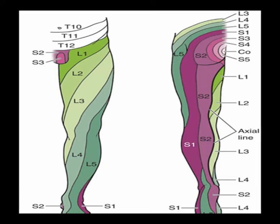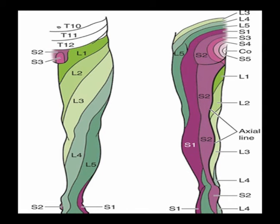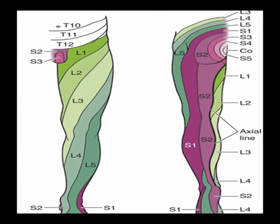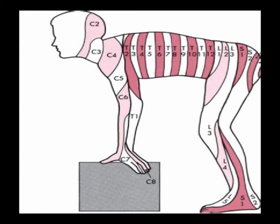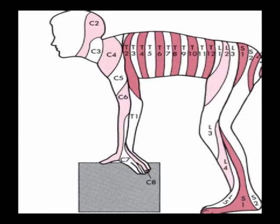Dermatomes are areas on the skin where sensory perception is controlled by a spinal nerve root. L1 controls the proximal anterior thigh. L2 is the anterior medial thigh. L3 is the medial epicondyle of the femur. L4 is the medial lower leg and medial malleolus. L5 is the anterior lateral lower leg and mid-dorsum of the foot. S1 is the lateral lower leg, lateral malleolus, and lateral portion of the plantar aspect of the foot. S2 is the posterior medial thigh and lower leg. S3 is the ischial tuberosity and infragluteal fold. S4 and S5 are the perianal area.